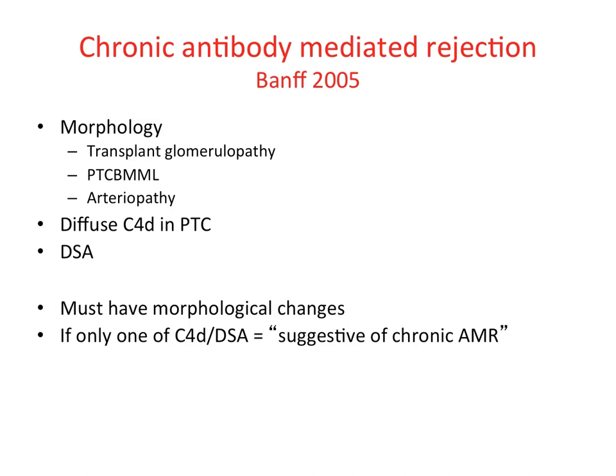Chronic antibody-mediated rejection was more closely defined in Banff 2005 with three criteria. First, morphology: patients had to have evidence of transplant glomerulopathy, peritubular capillary basement membrane multilayering (PTC-BMML), and arteriopathy with no other specific cause. Second, evidence of diffuse C4D in the peritubular capillaries. Third, evidence of a circulating donor-specific antibody, usually HLA-specific. To make the diagnosis, you need the morphological changes plus both C4D and DSA. With only one of those, you can only make a diagnosis of 'suggestive of chronic antibody-mediated rejection.'